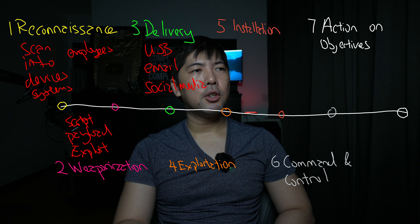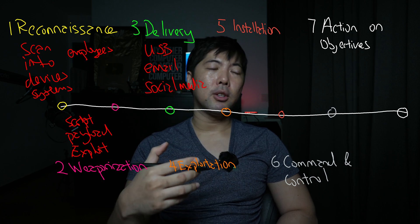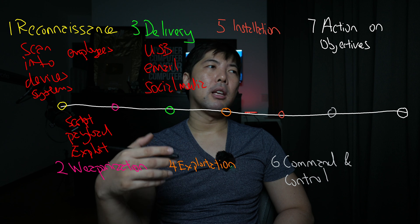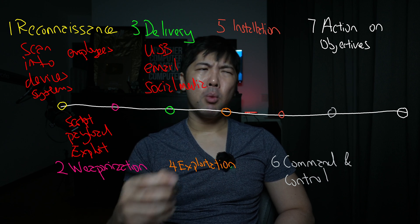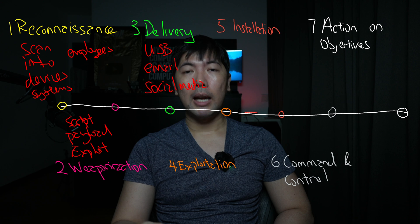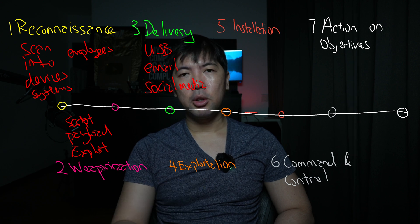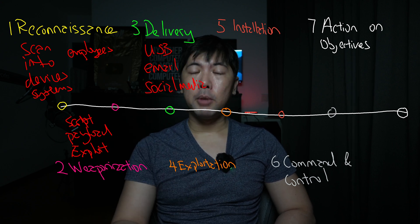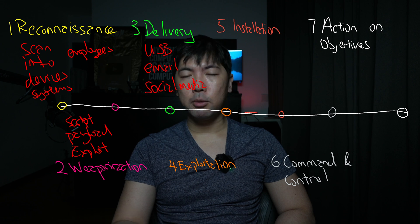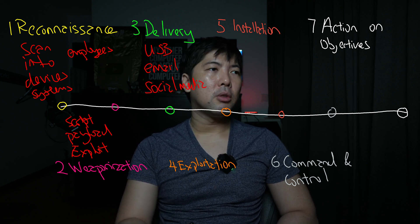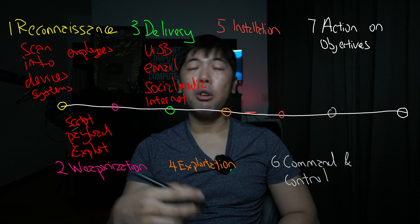Delivery can also happen through social media messages — for example, sending fake job opportunities to employees promising a 30% salary bump, harvesting their personal data, or attaching a job description file containing malicious code. In other cases, the payload can be sent directly over the internet to target services.